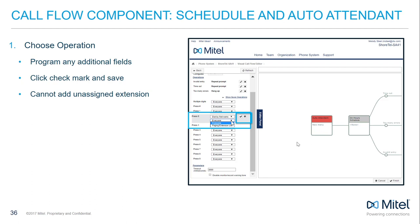Be sure you assign a valid extension when configuring prompts. Call flow is connected via extensions of different components. You cannot build forward in the connect call flow editor creating linked components as you go — if you're linking to a component in the auto attendant, the component must already be built. You also cannot enter an extension in advance planning to build the linked component afterwards; extensions must already be assigned to a component or a user in order to be linked to.